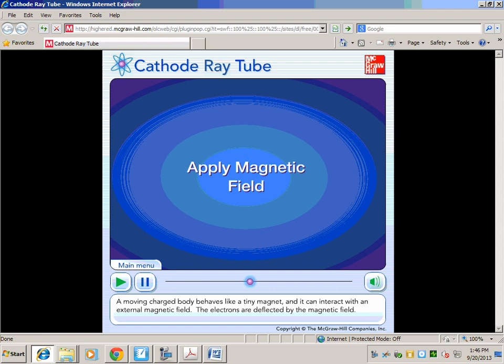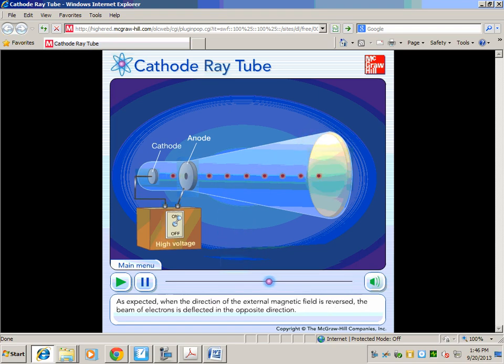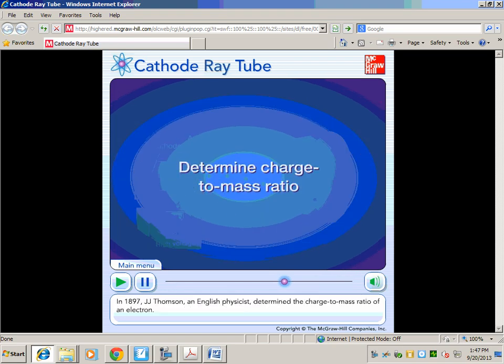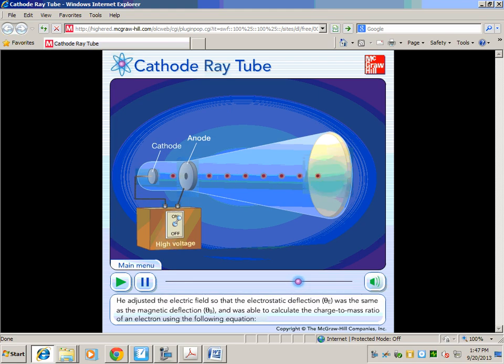He applied a magnetic field, the same thing happened. We know from physics that electricity and magnetics are very closely related. So what he ended up determining is that this cathode ray contained these negatively charged particles.